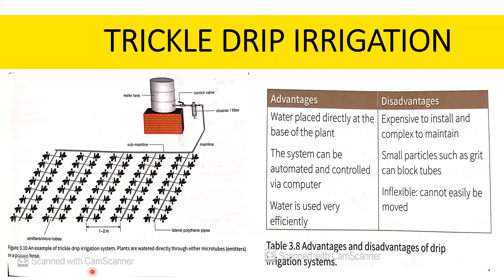The disadvantages of trickle drip irrigation are: its initial cost is high; it may cause clogging if water is not filtered correctly; there is a salinity problem; high skills are required; and grit can block the tubes.